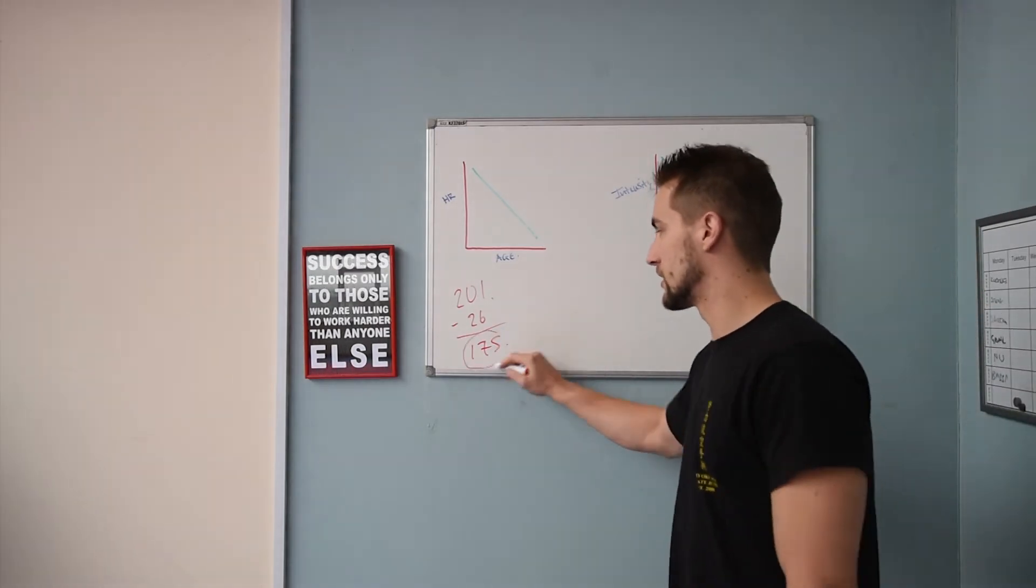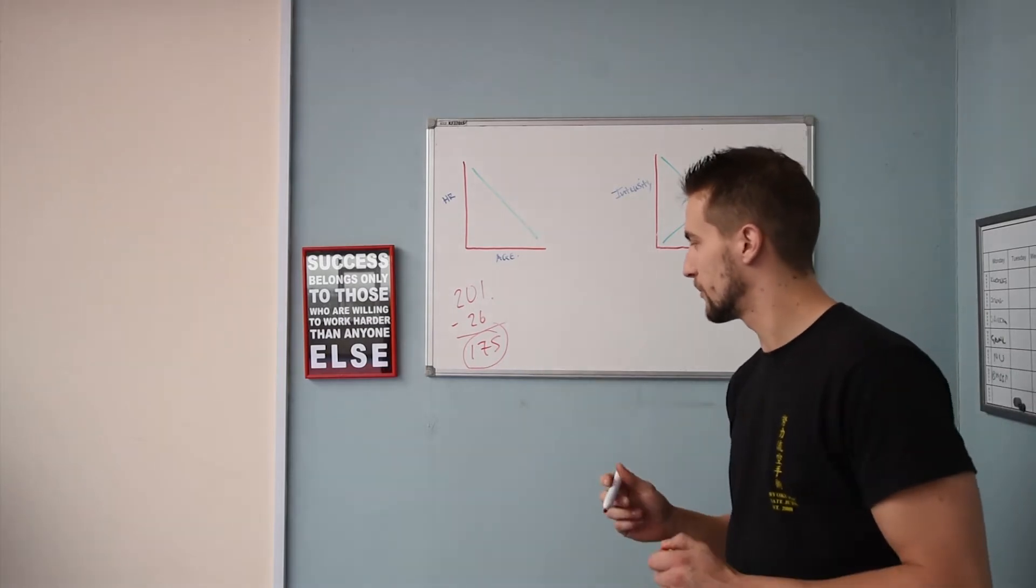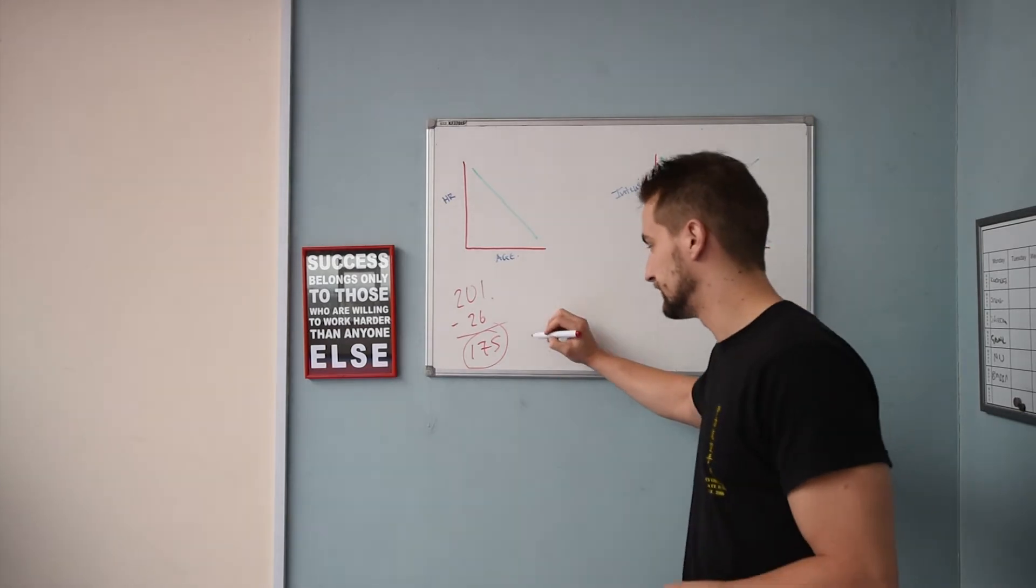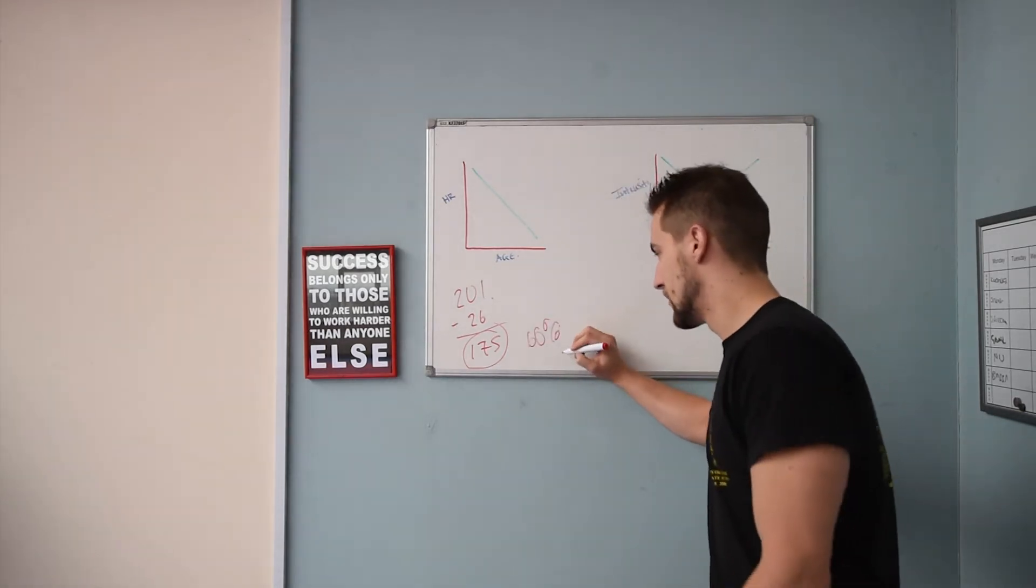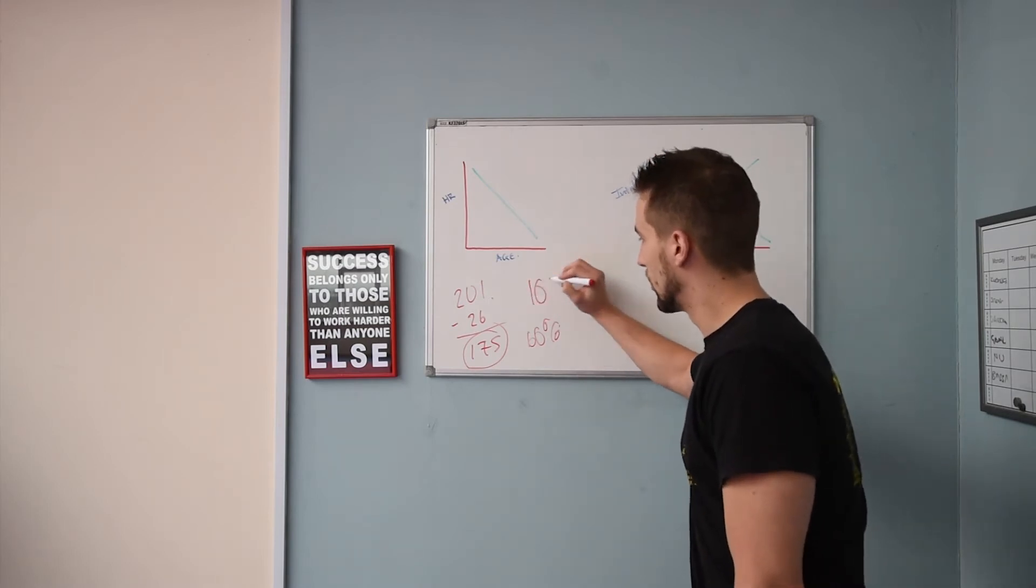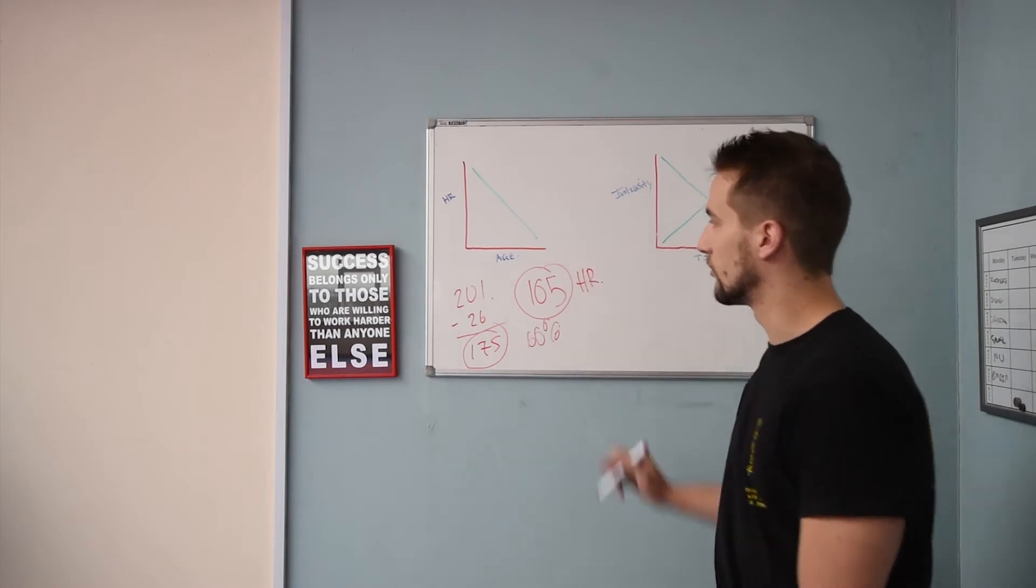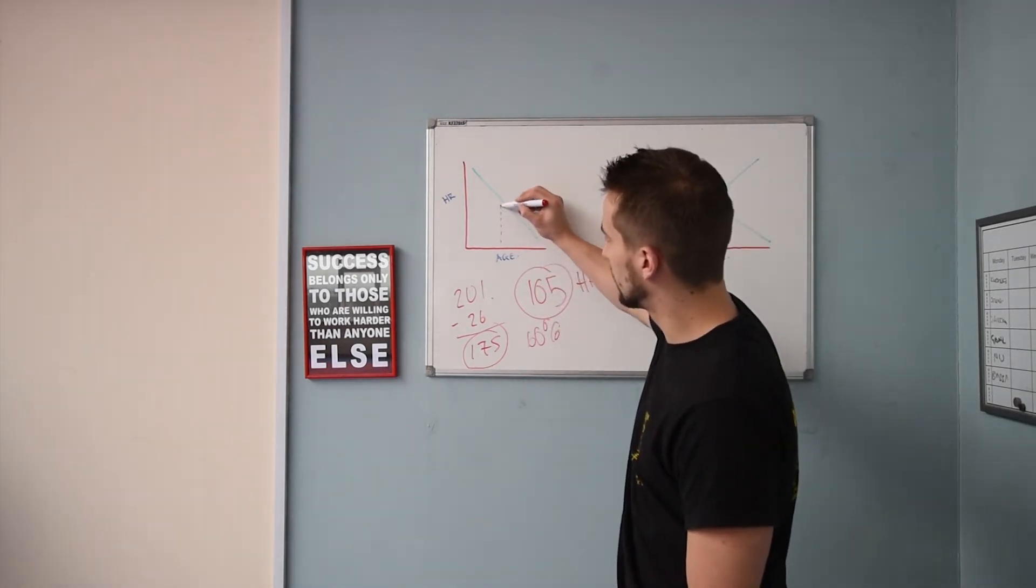Now that there is my maximum. I probably think I've probably gone just up to that before, but I need to find 60% of that. So 60% of that. I've already worked it out. Mine is actually 105 heart rate.